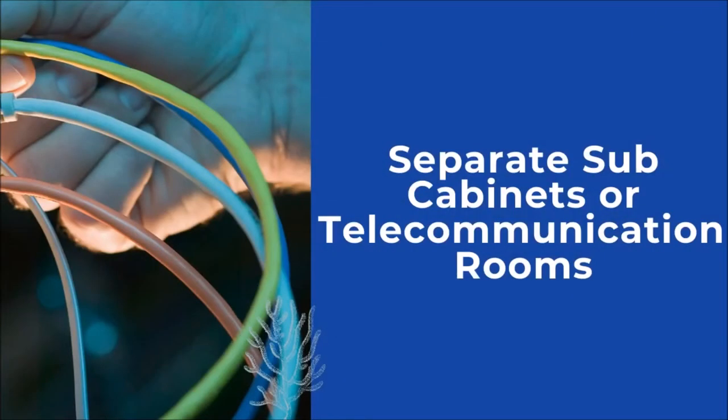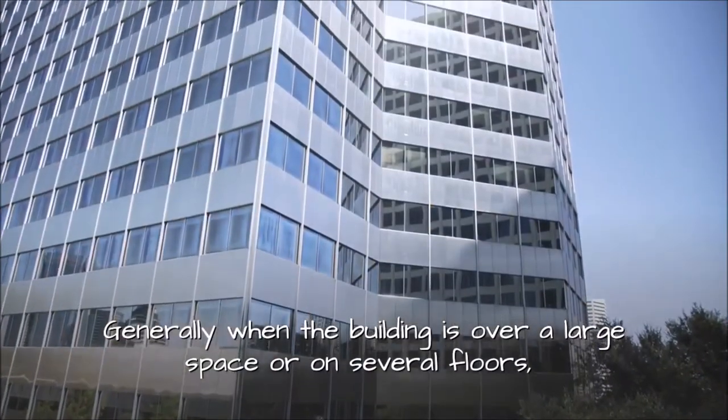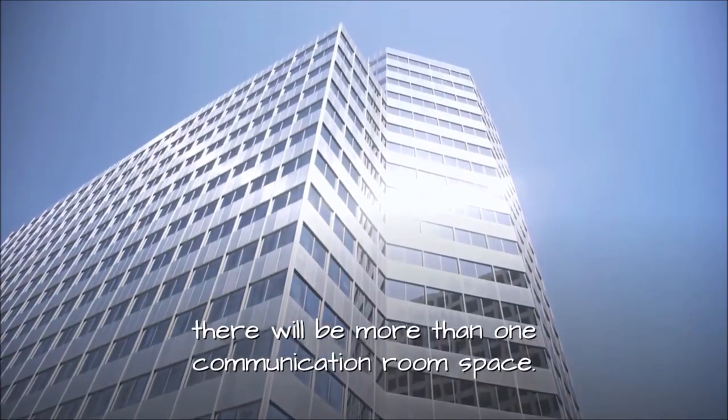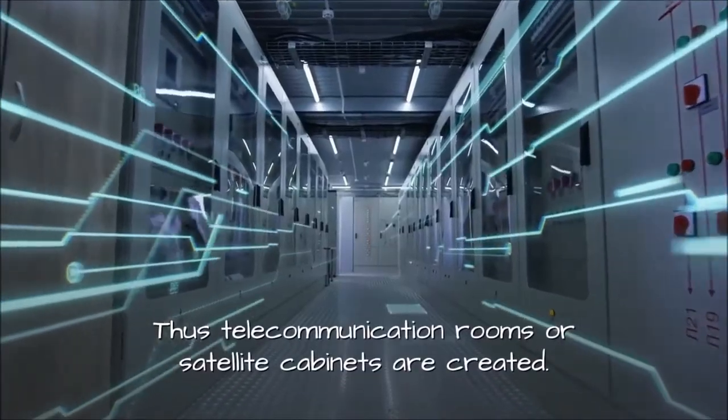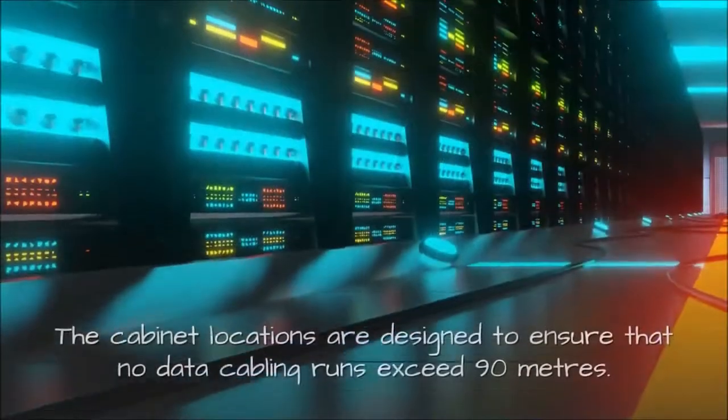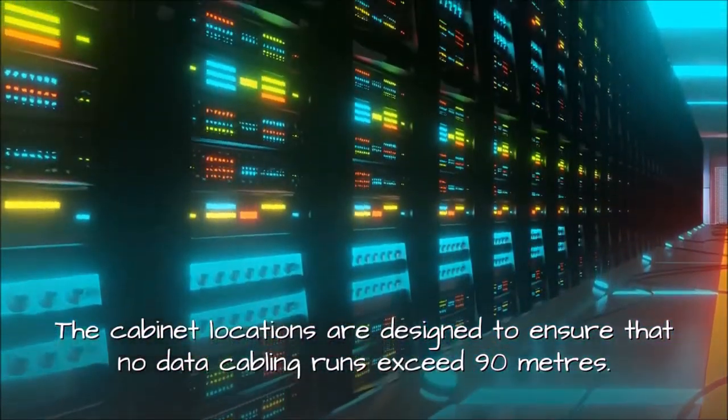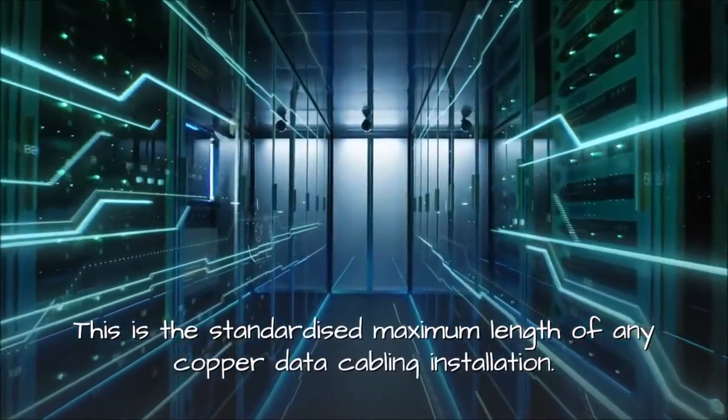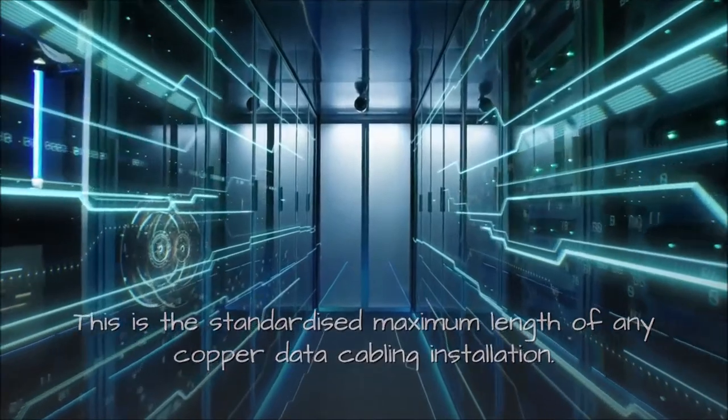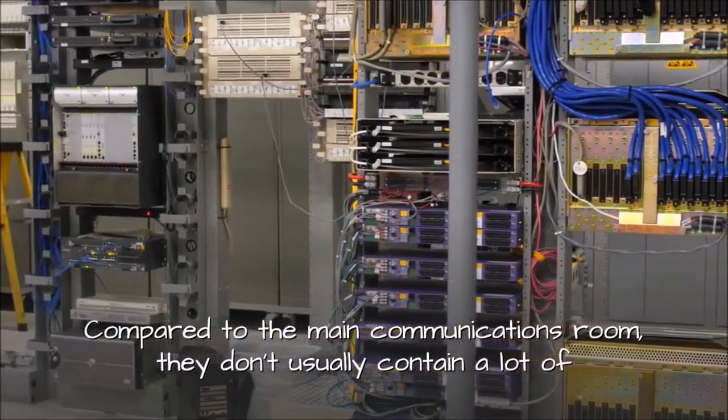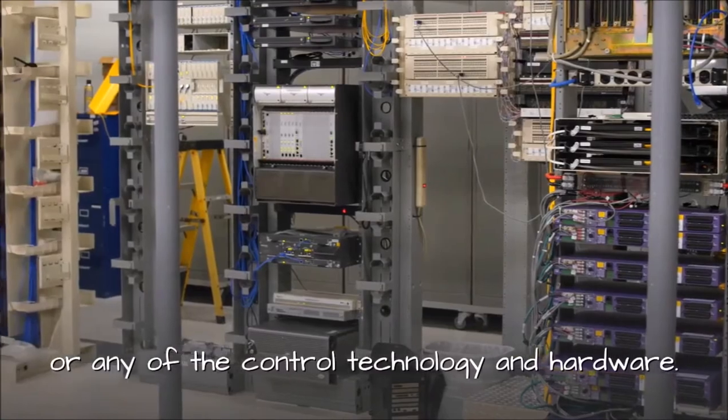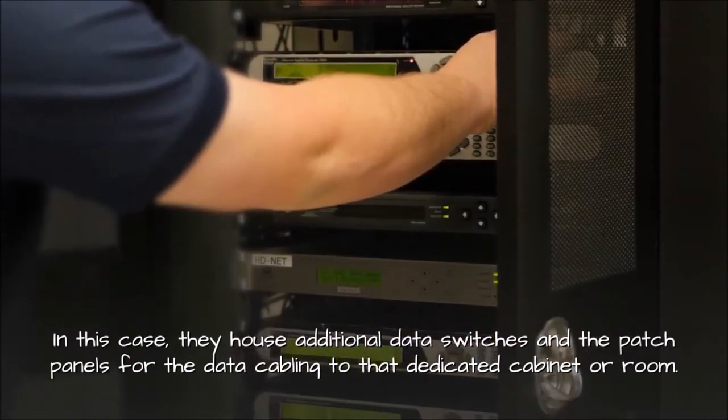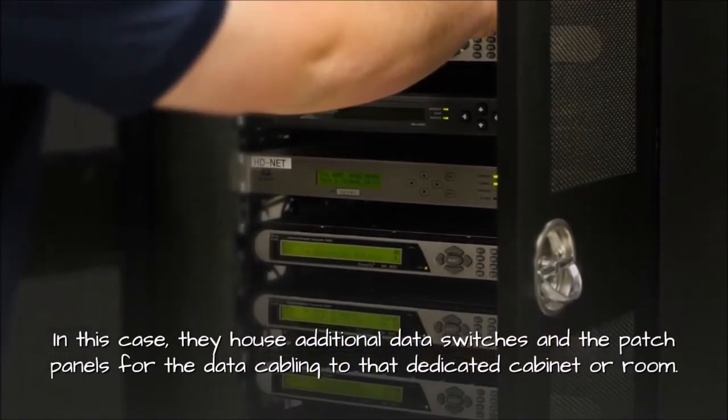Separate sub-cabinets or telecommunication rooms. Generally when the building is over a large space or on several floors, there will be more than one communication room space. Thus telecommunication rooms or satellite cabinets are created. The cabinet locations are designed to ensure that no data cabling runs exceed 90 meters. This is the standardized maximum length of any copper data cabling installation. Compared to the main communications room, they don't usually contain a lot of or any of the control technology and hardware. In this case, they house additional data switches and the patch panels for the data cabling to that dedicated cabinet or room.